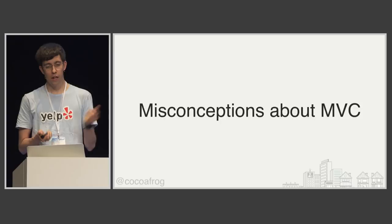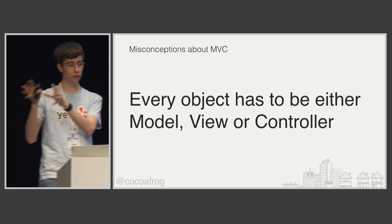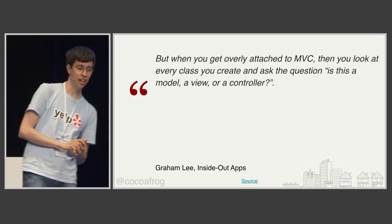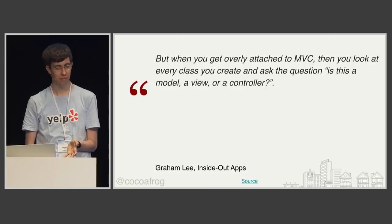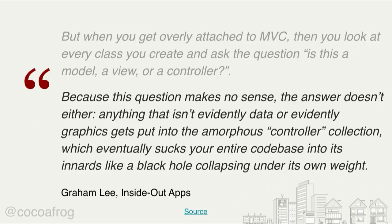The reason we often end up with massive view controllers is common misconceptions about MVC. The first misconception is that every object has to be either a model, a view, or a controller. That is not true. There's a nice quote by Graham Lee: 'When you get overly attached to MVC, you look at every class and ask: is this a model, a view, or a controller? Because this question doesn't make sense, the answer doesn't either. Anything that isn't evidently data or evidently graphics gets put into this amorphous controller collection, which eventually sucks in your entire codebase like a black hole collapsing under its own weight.' I could end the talk here.